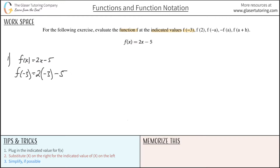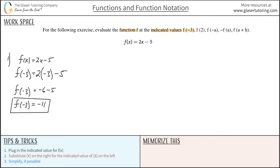Then simply simplify if possible. So f of negative 3: when we do the distribution here, 2 times negative 3 is negative 6, minus 5. Negative 6 minus 5, we add them together and keep the negative sign — that's negative 11. So that takes care of the first part. Fairly straightforward.